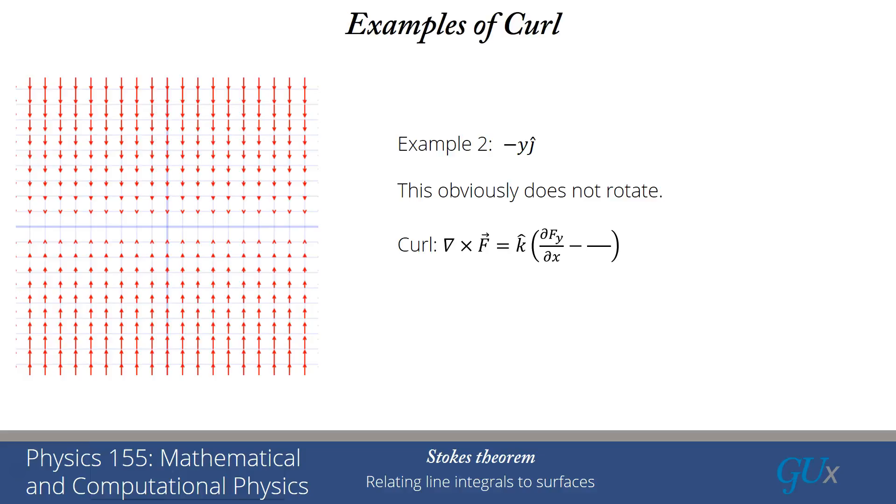The curl is del cross f, is dfy/dx minus dfx/dy. fx is 0, so that term doesn't appear at all. fy is y, so d by dx of y is 0. And indeed, the curl is 0 for this. So this satisfies our notion that something that doesn't look like it rotates has a curl that is equal to 0.